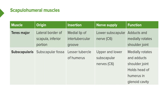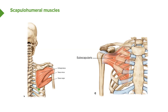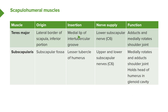Teres major runs from the lateral border of the scapula near the inferior angle, passing towards the intertubercular groove — specifically the medial lip of the intertubercular groove. It is innervated via the lower subscapular nerve and adducts and medially rotates the shoulder joint. Subscapularis comes from the subscapular fossa and runs to the lesser tubercle, innervated via upper and lower subscapular nerves, and is important in medially rotating and adducting the shoulder joint, working with teres major.